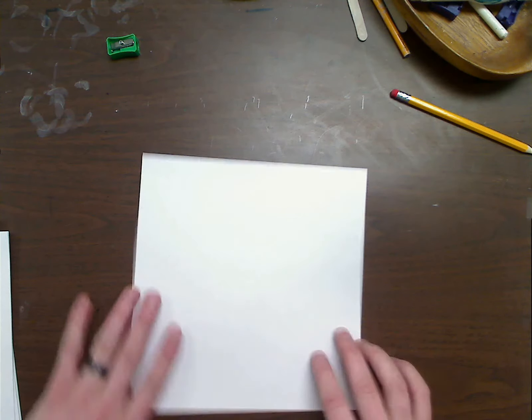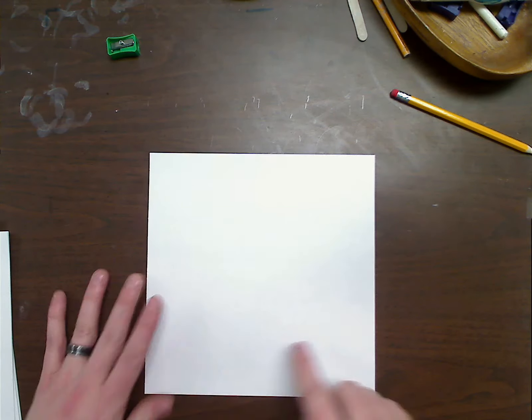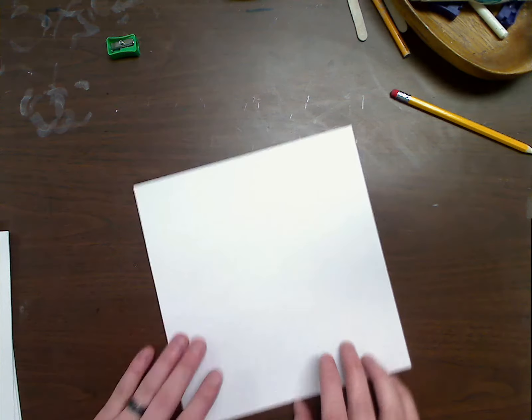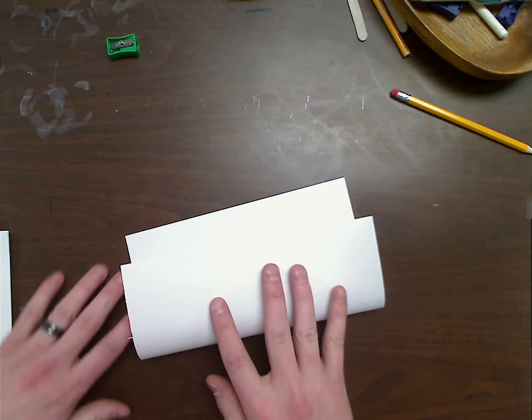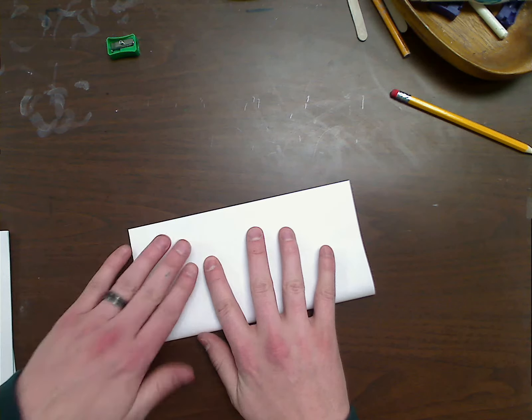When you are creating your snowflake, it is a square, so it doesn't matter which way your paper is. First thing you're going to do is fold it in half.